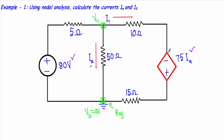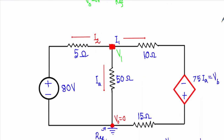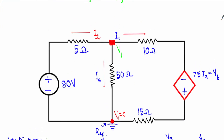As this is a current-dependent voltage source, let's say 75·Ia equals a voltage source Vb. If I mark the circuit with all the node voltages, our new circuit will look like this. Since there is no current source, all the currents are unknown, so when I apply nodal analysis I have to take all currents as outgoing from this node.